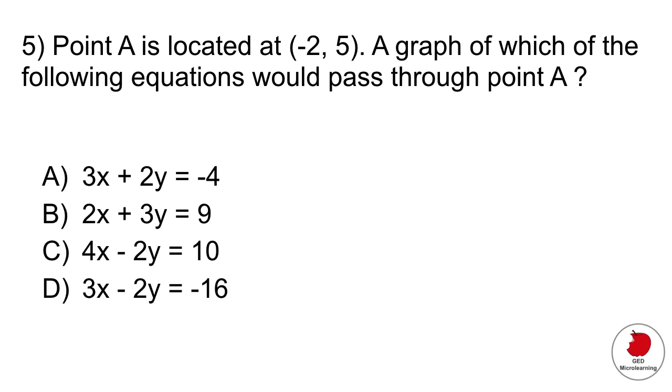Point A is located at minus 2 comma 5. A graph of which of the following equations would pass through point A? Quick recap: whenever you see something like this, they're giving you what is known as an ordered pair. These are coordinates. Remember, the first value is an x value. The second one is your y coordinate.